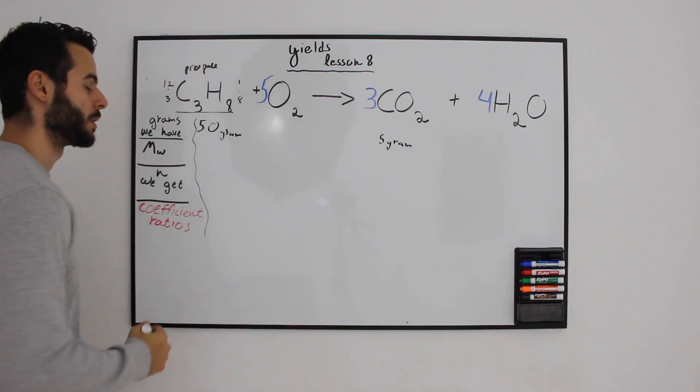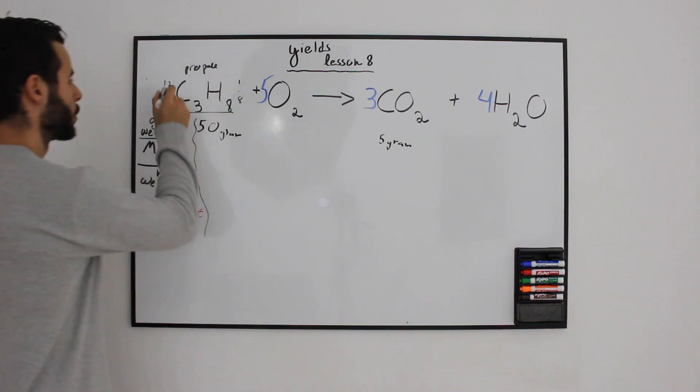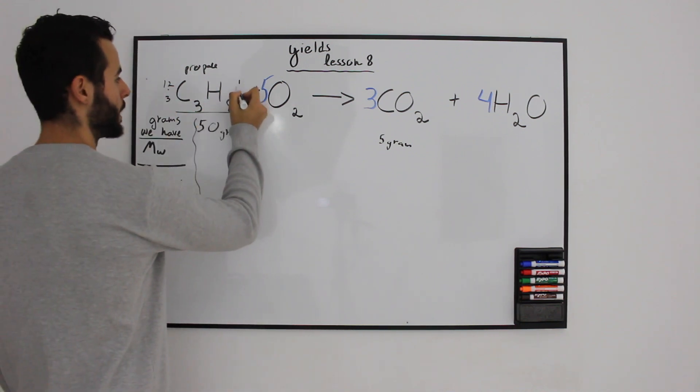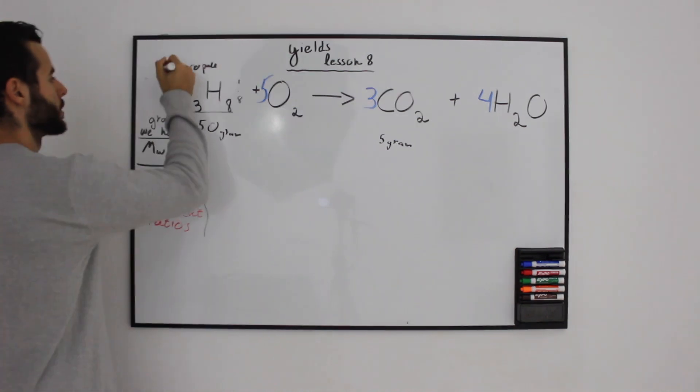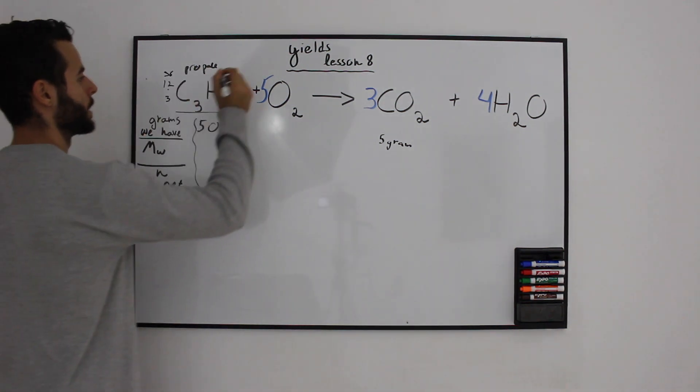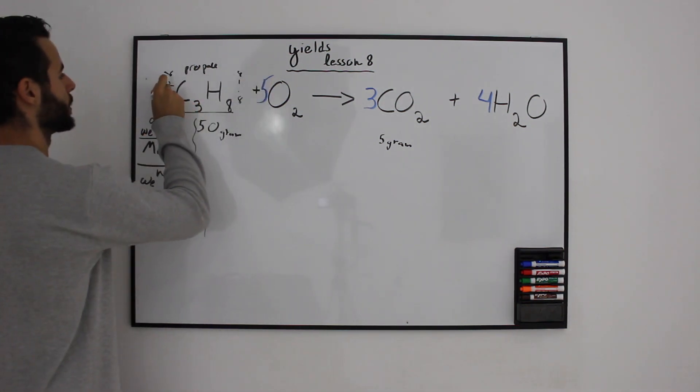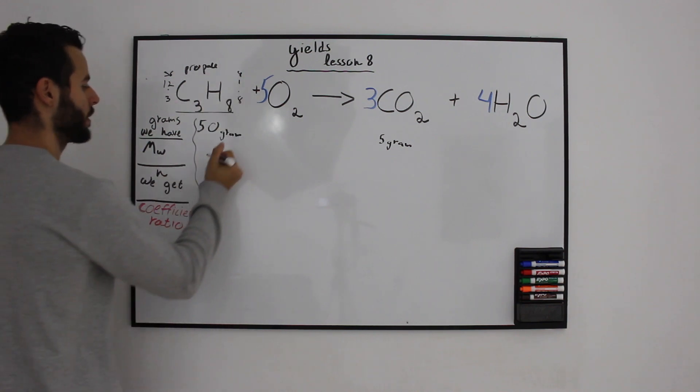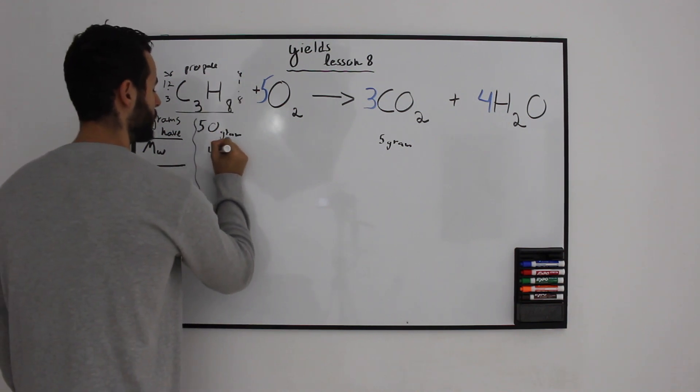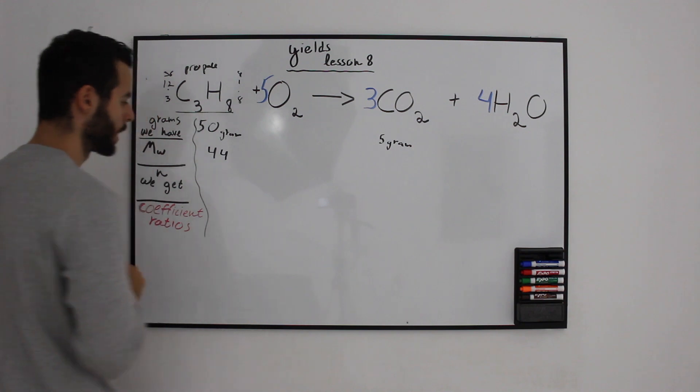So 12 times 3 and 8 times 1. This is 36 and this is 8. 36 plus 8 means we have a molecular weight of 44. That's awesome. Let's keep going.